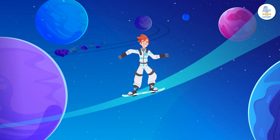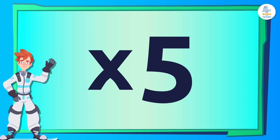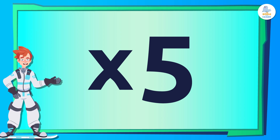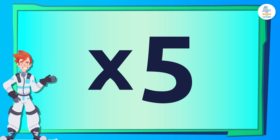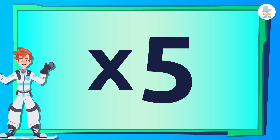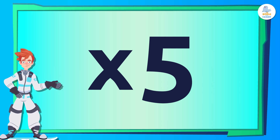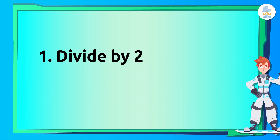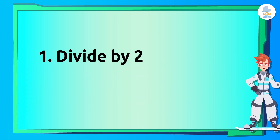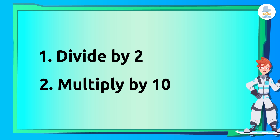Here we go! Let's start by learning the trick to quickly multiply any even number by 5. First, divide the number by 2, then multiply the result by 10.